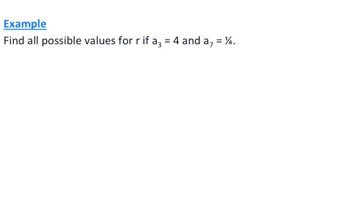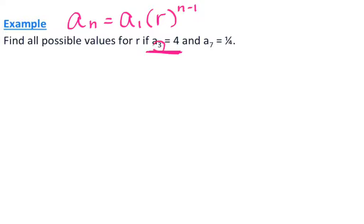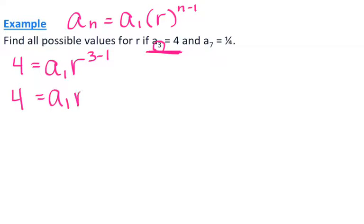For the second example, find all possible values of r if the third term is 4 and the seventh term is one-fourth. I don't know my first term or my common ratio, but I can still use the sequence formula. For my third term, plugging in 3 for n, I get 4 equals a_1 times r squared.